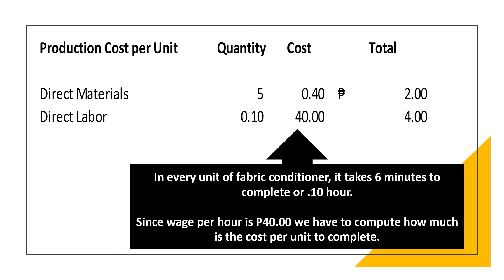For the direct labor, every unit of fabric conditioner takes 6 minutes to complete, or 0.10 hour. Since the rate per hour is 40 pesos, we have to compute how much is the cost per unit to complete, and that is 4 pesos.